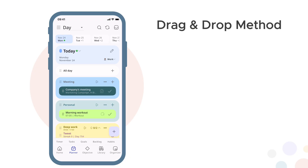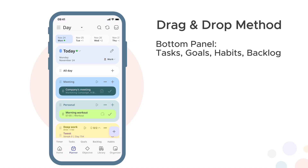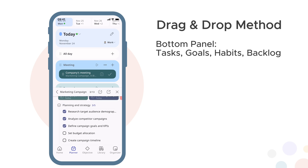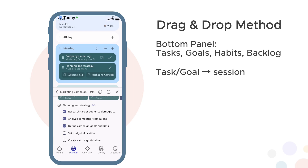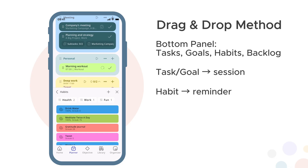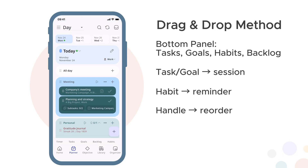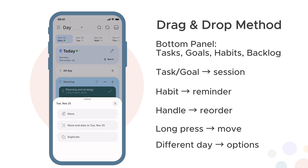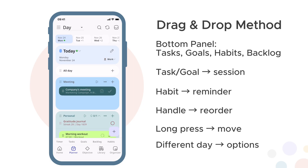Drag and drop method. The second way to add items is drag and drop — it's fast and visual. In day view, you'll see a bottom panel showing your tasks, goals and habits. Tap any item to expand it and see its subtasks. Drag a task, goal or subtask from the bottom panel up into the calendar and it becomes a calendar session. Drag a habit and it becomes a reminder. You can also manage existing planner items: drag the handle on an item to reorder within its block, long press and drag to move it to a different block, or to a different day where you get an options menu — move to change the date, duplicate to create a copy, or change end date to extend how long it spans. Fast, visual and flexible.